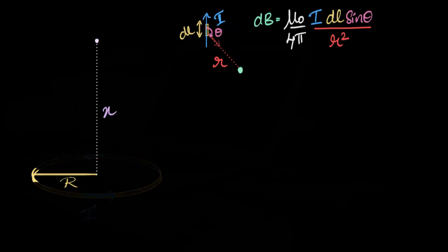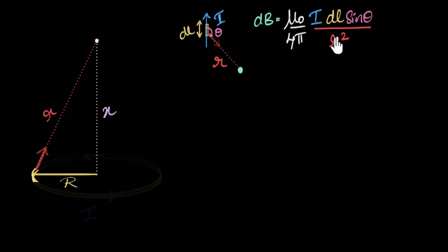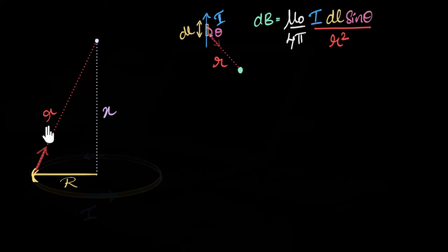So imagine this is our tiny current-carrying wire, and I want to calculate the magnetic field at this point only due to this piece. I have to first draw a line connecting from here to here — that will be my R. So if I substitute, the constant stays the same, the current is I, the length of that current element is dL. The two things we need to know are: what is the value of R, and what is theta?